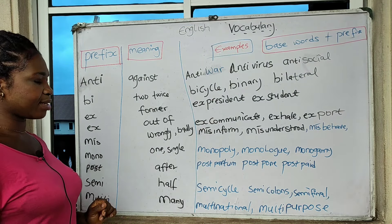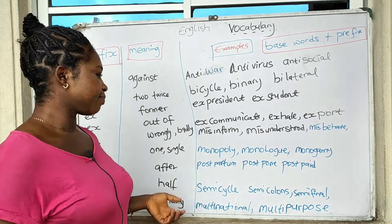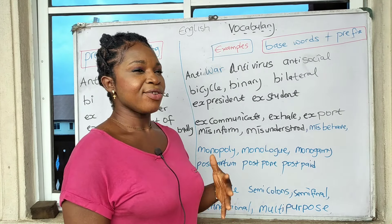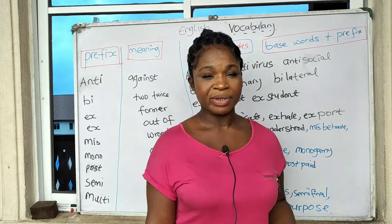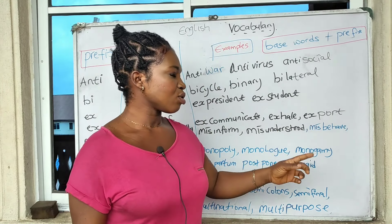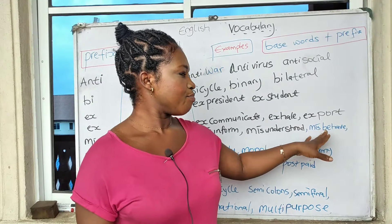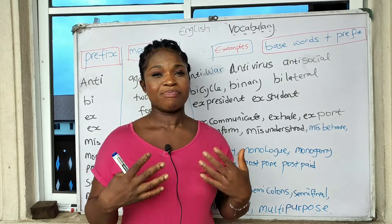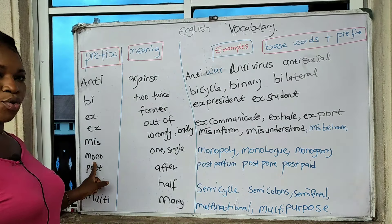'Mis' means wrongly or badly. 'Misinform' means you inform badly — you gave the wrong information. 'Misunderstood' means you understood something incorrectly from what was said. 'Misbehave' means you are behaving abnormally — if you are not behaving normally, you are misbehaving.